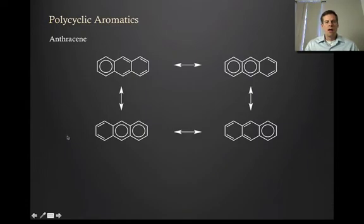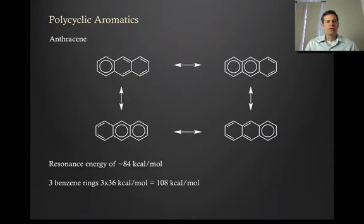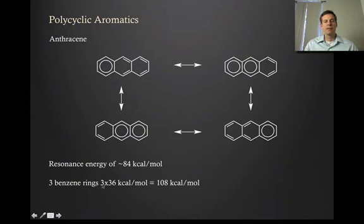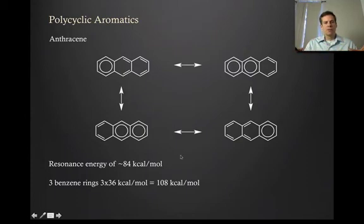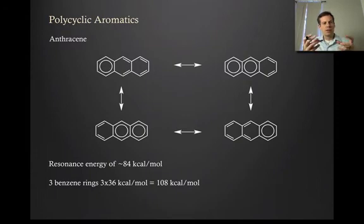If we look at the resonance stabilization of anthracene, we find that it's about 84 kcal/mol, which is significantly lower than if anthracene had the properties of just three isolated benzene rings — which we would expect to be three times 36 kcal/mol, or 108 kcal/mol. So we've got a 24 kcal/mol difference in that stabilization. Again, as you continue to expand the conjugated system, even though it retains many properties of aromaticity, the aromatic stabilization becomes less and less per ring.